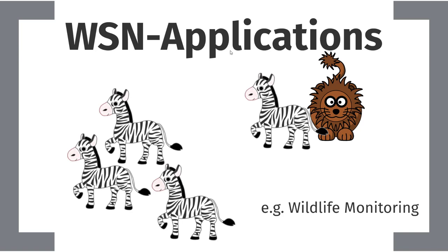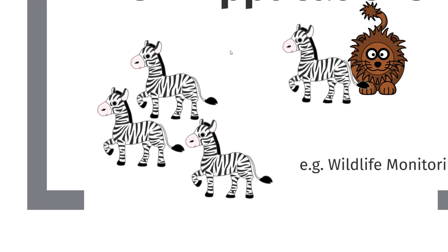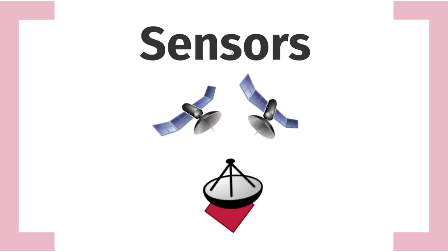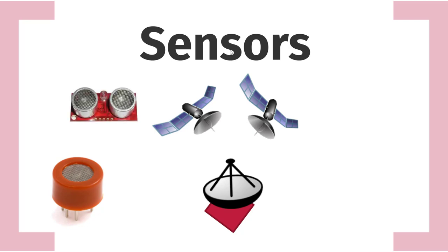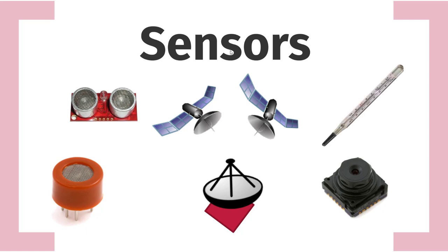If you want to monitor zebras — where and how they move — you first need a sensor. In this case, probably a GPS sensor or other satellite-based location sensors. Thinking of other use cases, it may also be of interest to detect gas nearby, measure exact distances using ultrasonic sensors, use camera sensors, or simple temperature sensors — just a small sample of the different sensors we can consider.